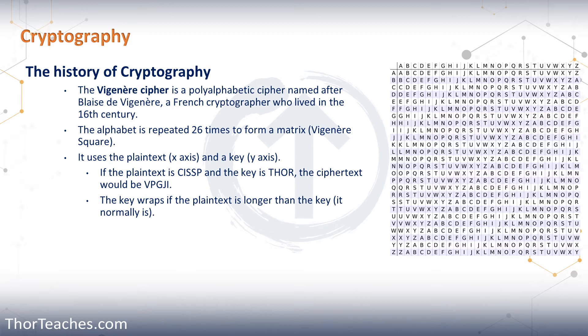For the C, you go to the C row on the X axis and then you go down to the first letter of the key, that's T. Where they intersect, it's a V. Then you do that for the rest of the plain text.